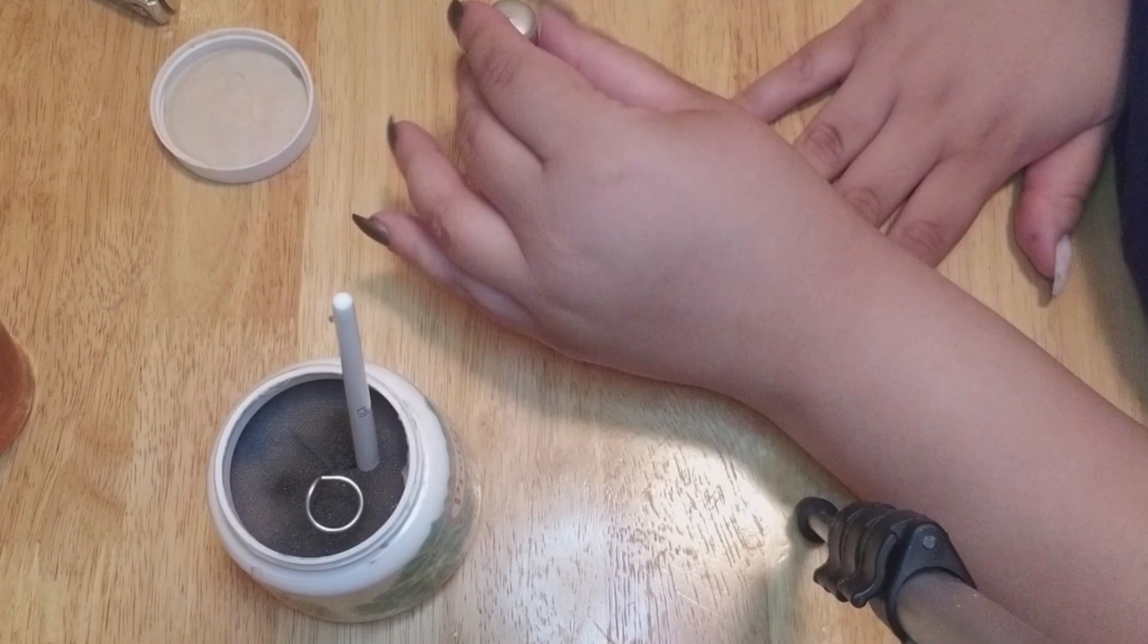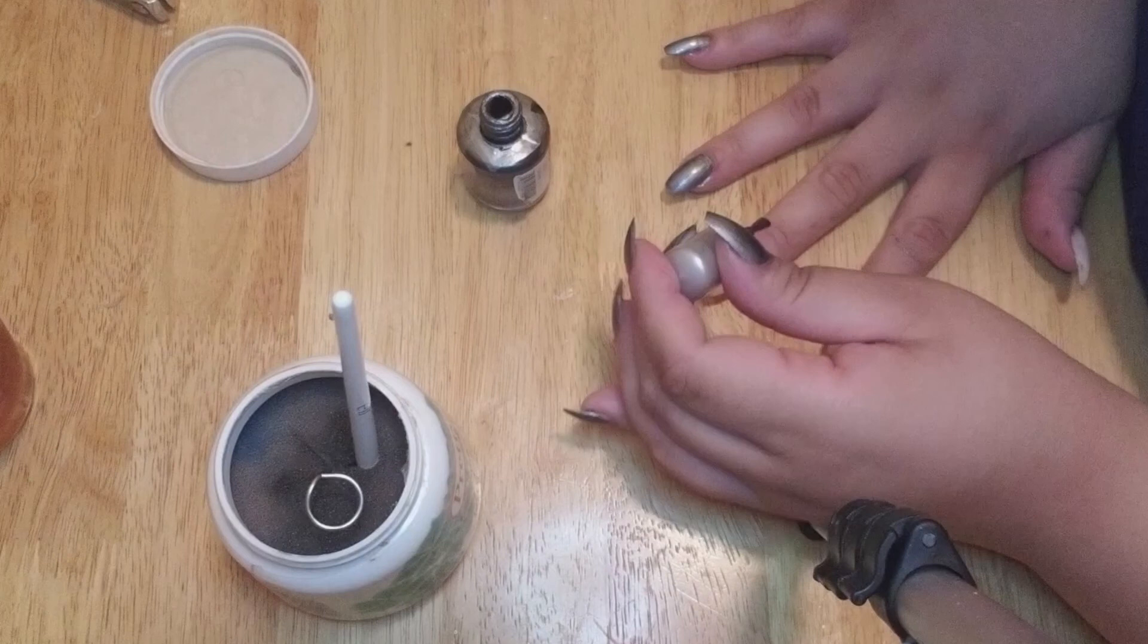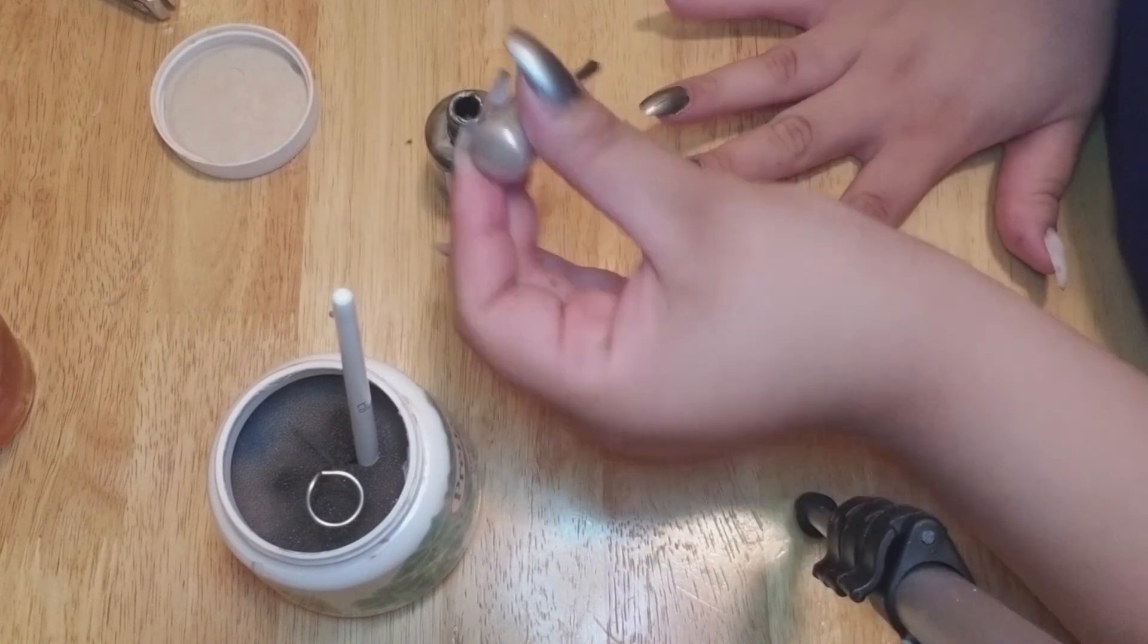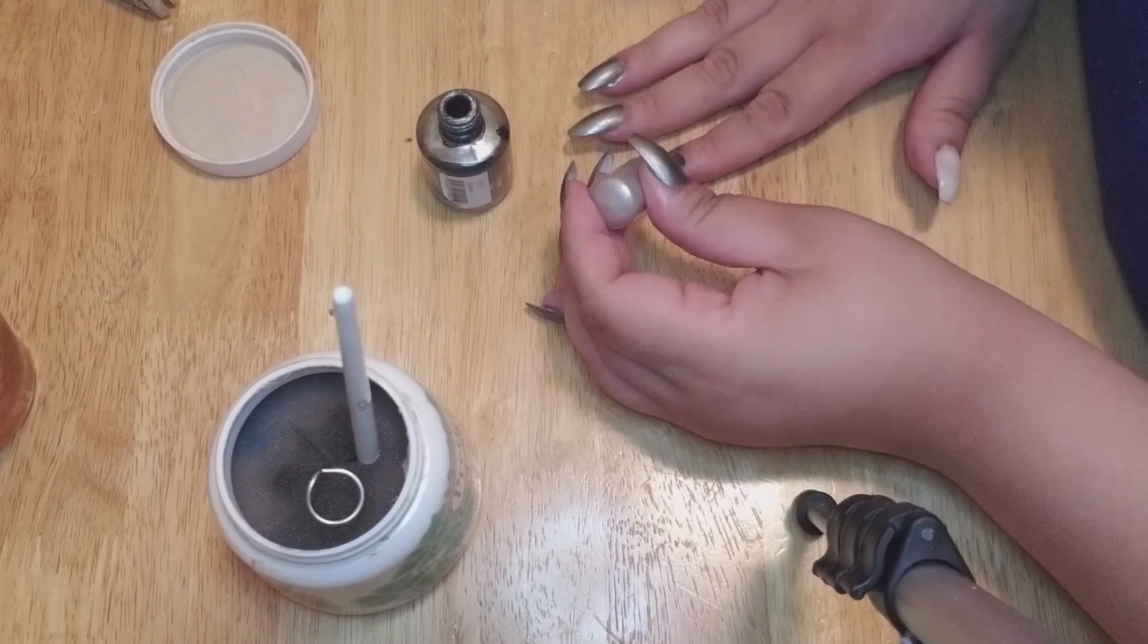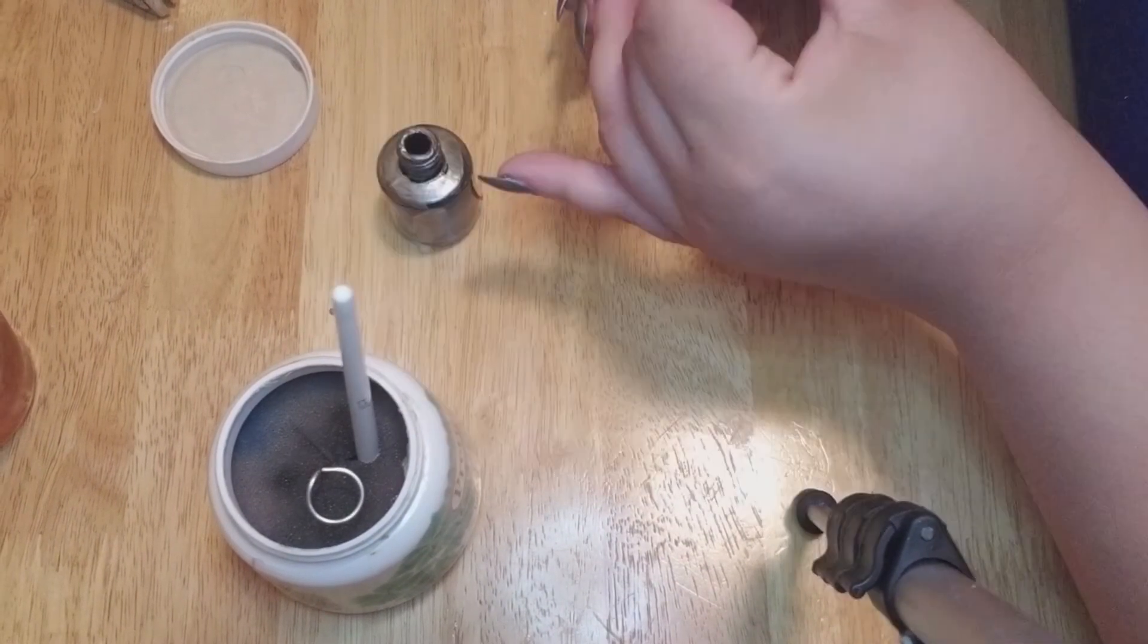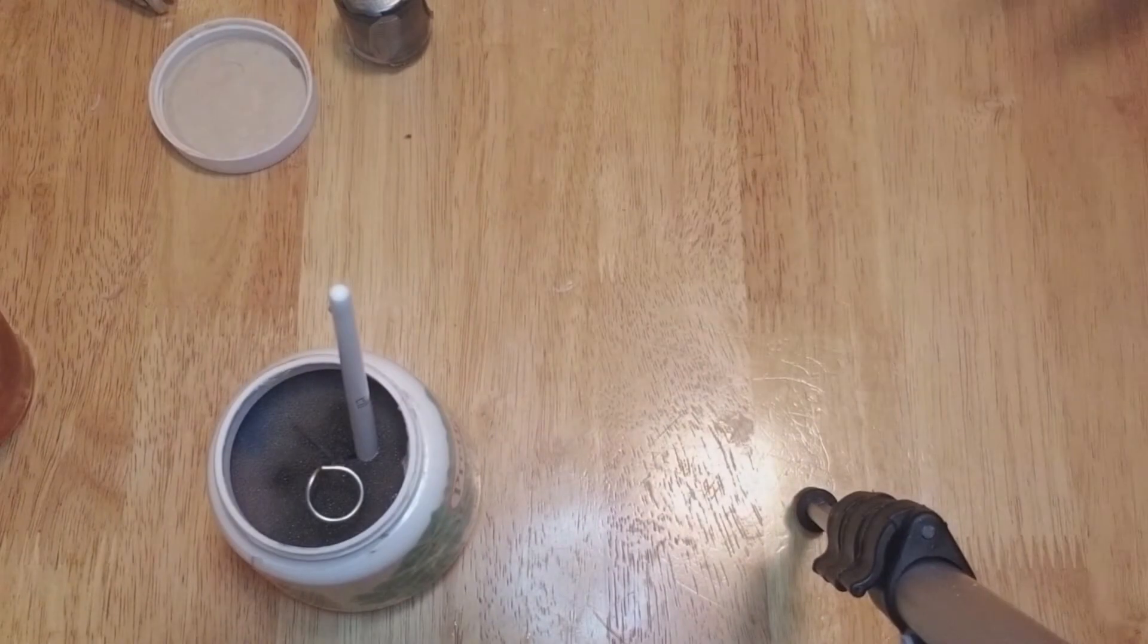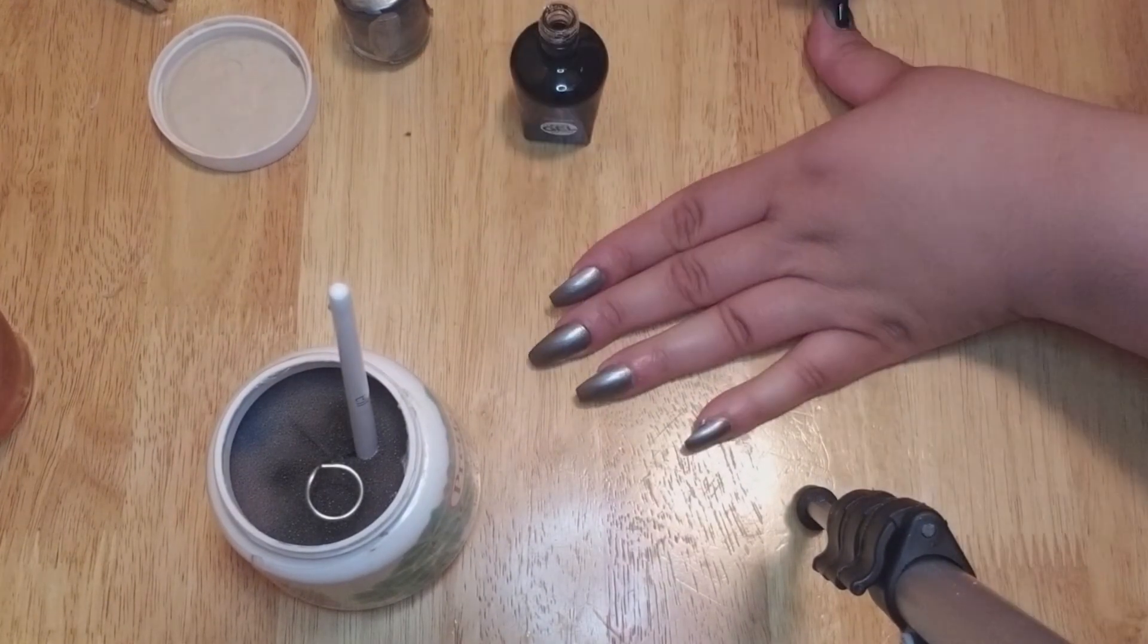And I think it came out super pretty, super shiny. You don't see that many people with that color, so it's kind of unique. And if you add a little gel top coat, it makes it even more shiny and it adds a little bit more hardness to the nails. Even though these nails already come super hard, it's always that little extra that just takes it over the edge.